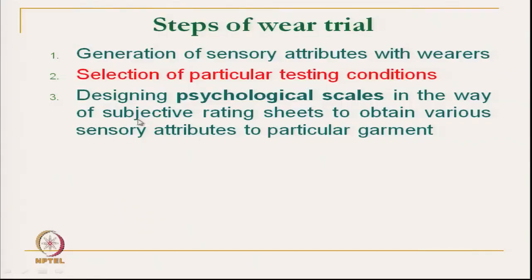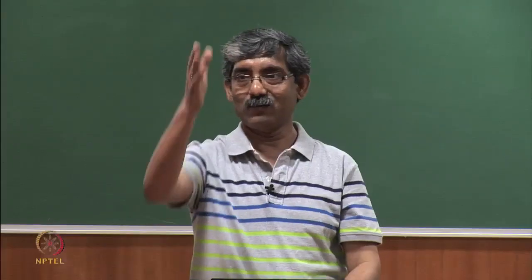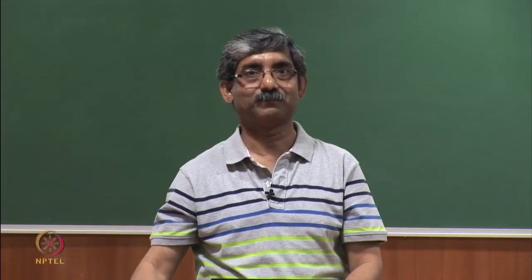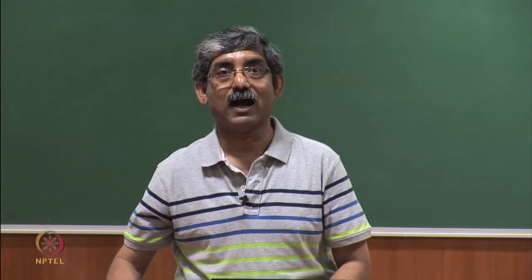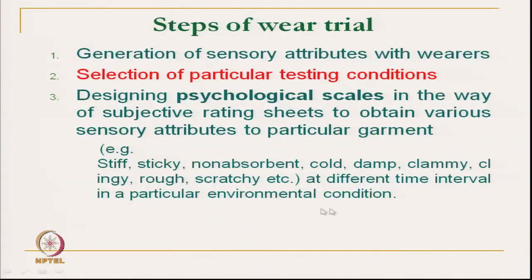The next step is the psychological scale — different types of rating scales. We have to design a particular rating scale as discussed earlier. What type of sensory attributes we want to evaluate determines which rating scale to select. For example, whether we want to evaluate stiffness, stickiness, non-absorbent, cold, damp, clammy, rough, or scratchy — at different time intervals. We have to design this test process at different time intervals in a particular environmental condition, and define the total questionnaire and procedure.